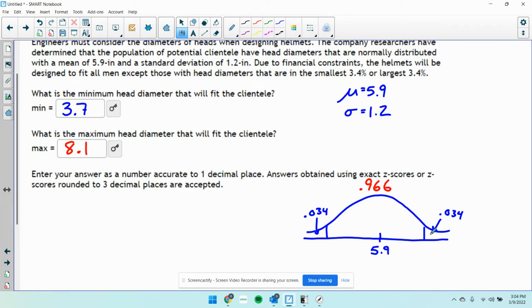To go up, I added 2.2. And to go down, I subtracted 2.2. So it's symmetrical.